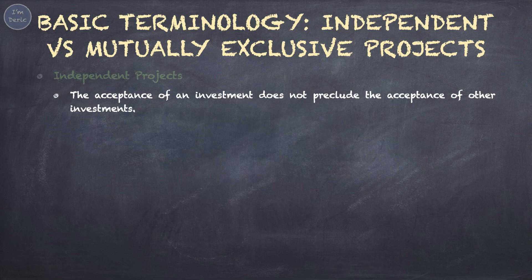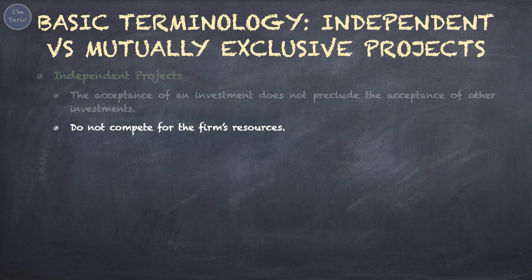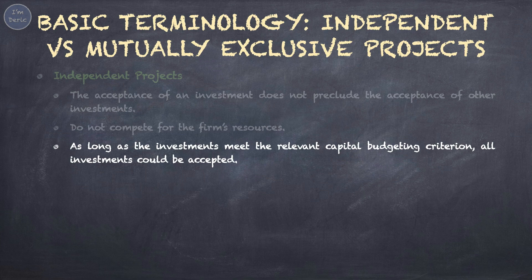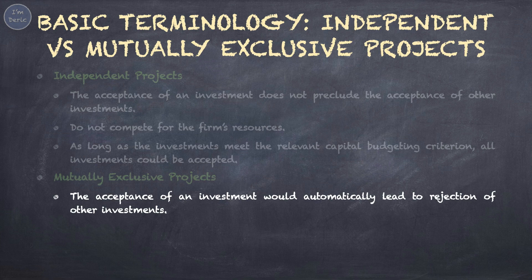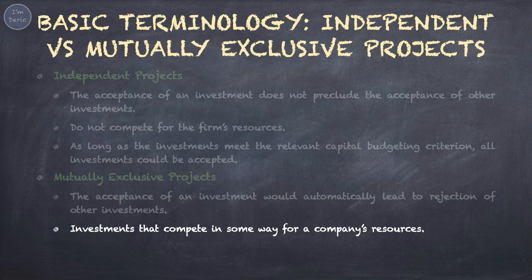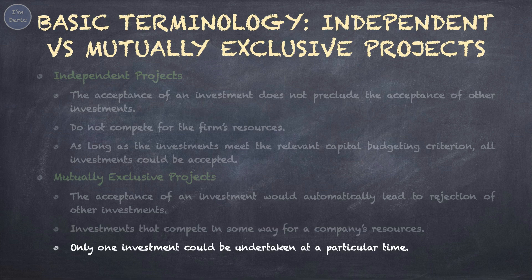For independent projects, the acceptance of an investment does not preclude the acceptance of other investments. In other words, accepting one project will not affect the decision of accepting another project, because the two projects do not compete for the firm's resources. As long as the investments meet the relevant capital budgeting criterion, all investments could be accepted. However, for mutually exclusive projects, the acceptance of an investment would automatically lead to the rejection of other investments. If you have two potential projects that are mutually exclusive, you can only choose to accept one out of the two. Mutually exclusive projects compete for a company's resources, so due to capital constraints, such projects cannot be undertaken simultaneously — only one investment could be undertaken at a particular time.